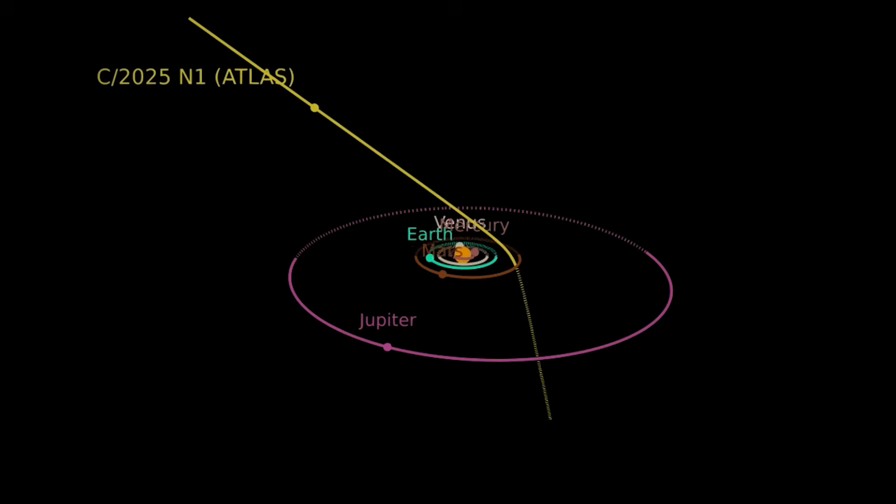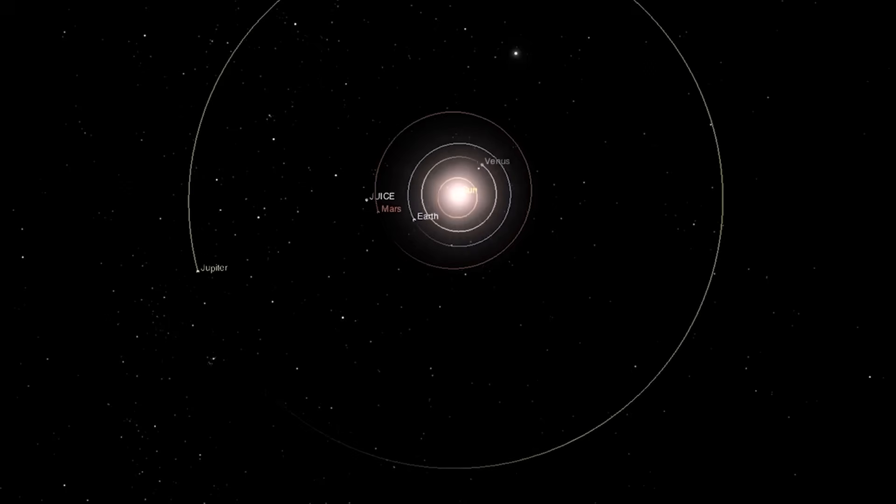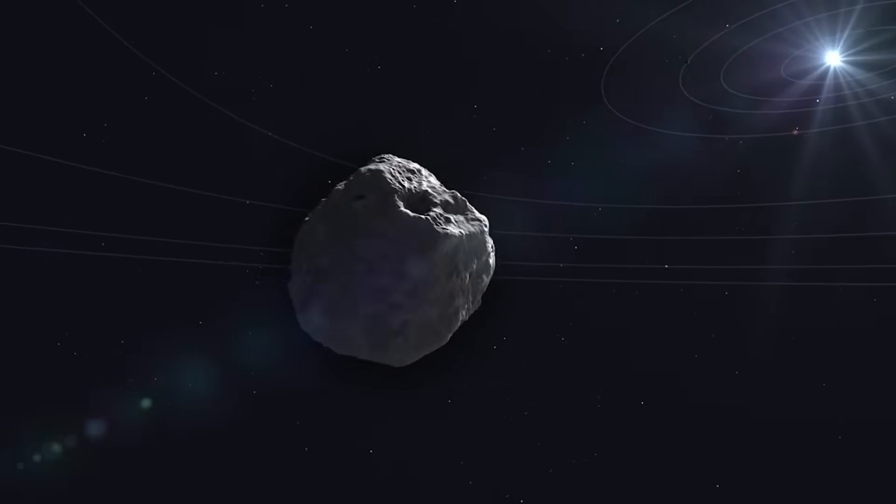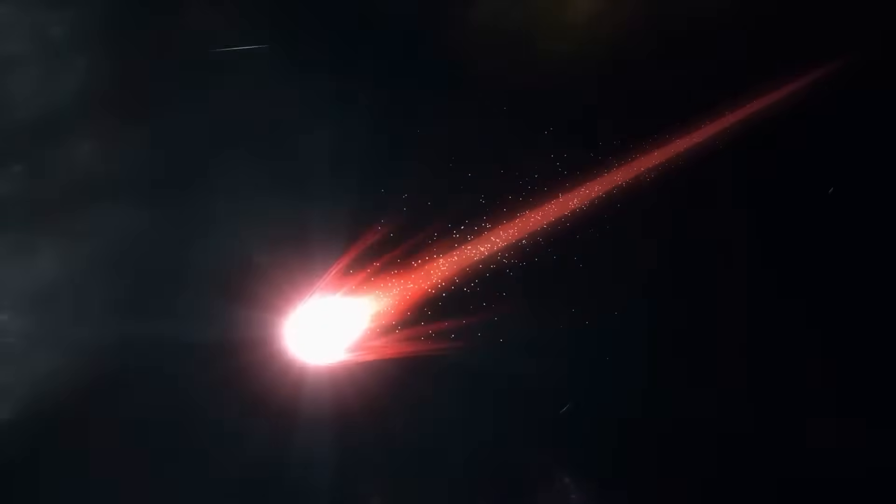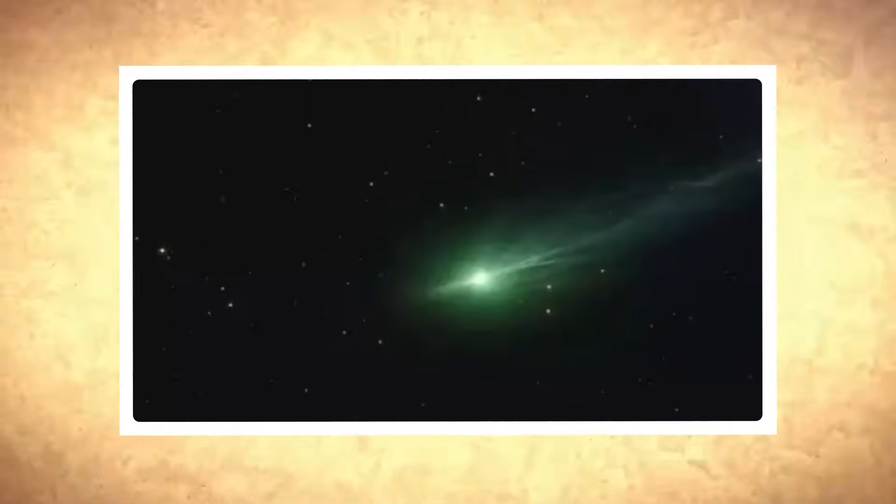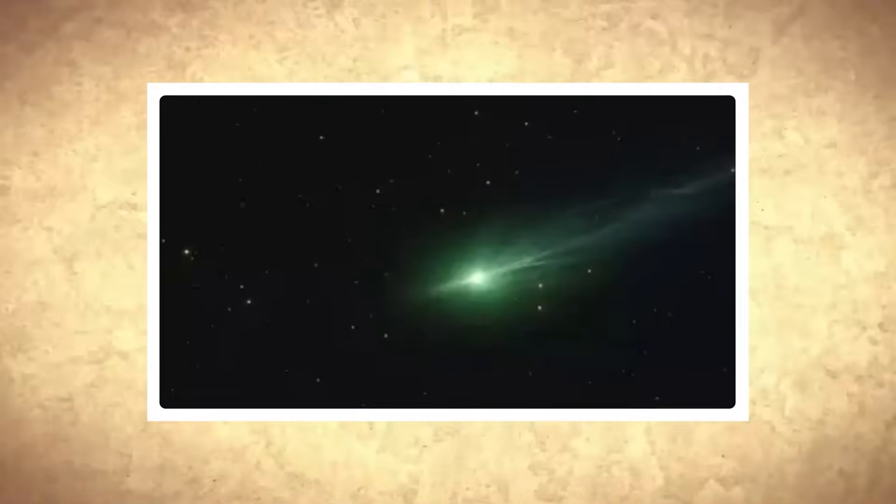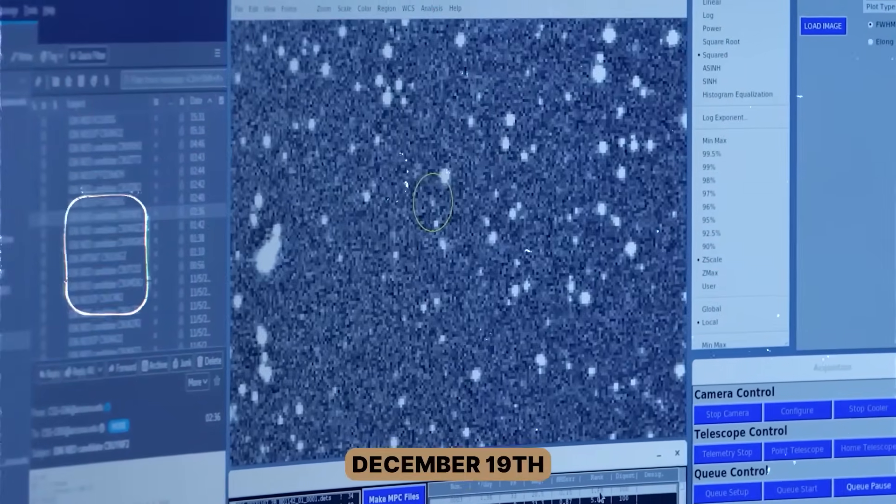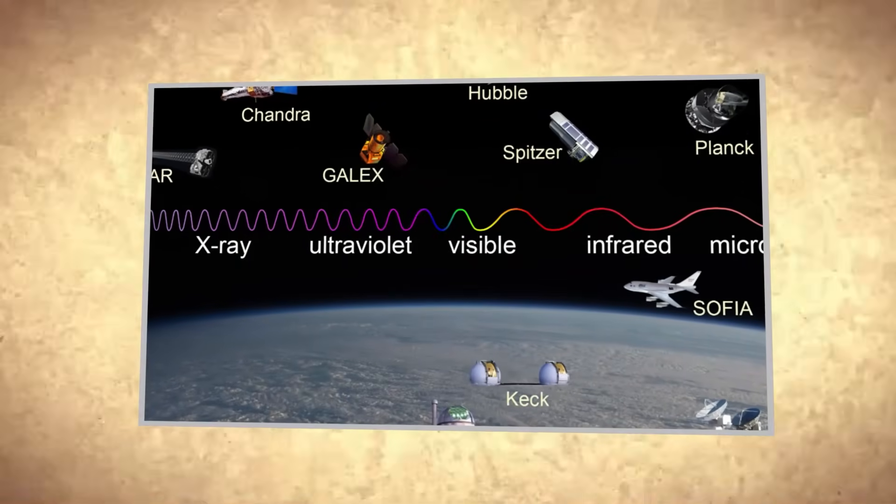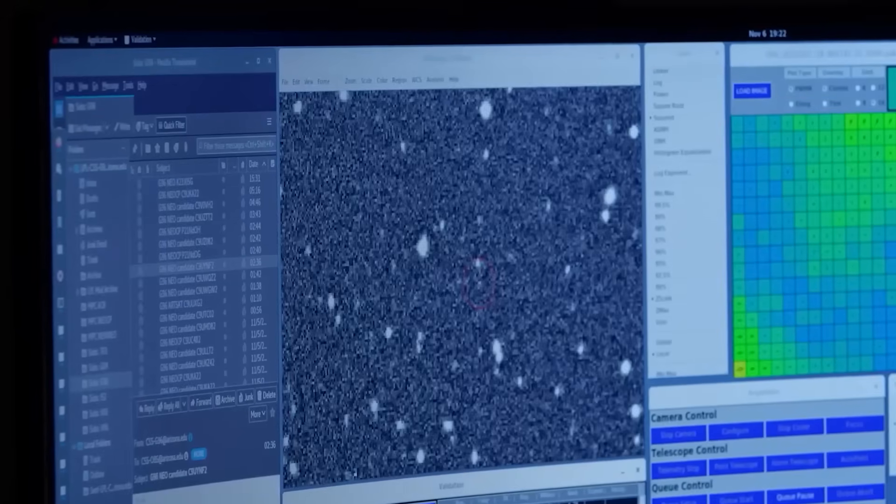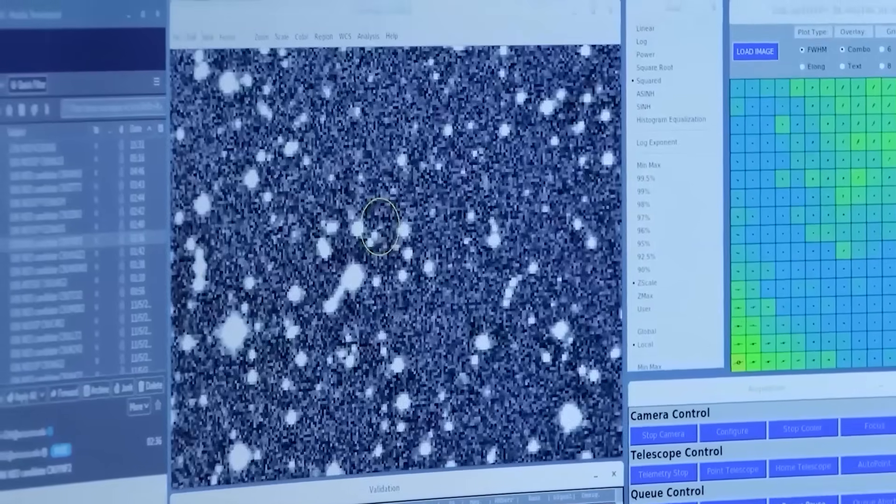The comet now approaching Earth isn't the same quiet object first spotted back in July. Something fundamental has changed. The heating from its close solar pass has clearly intensified the comet's activity, brightening its coma and strengthening its tails. These changes aren't mysterious. Comets often respond this way when sunlight warms their ices. But they provide scientists with a rare chance to study an interstellar visitor up close. And with December 19th approaching, telescopes across the solar system are poised to capture its final close pass, offering a detailed look at how this traveler from another star behaves as it swings through our cosmic neighborhood.